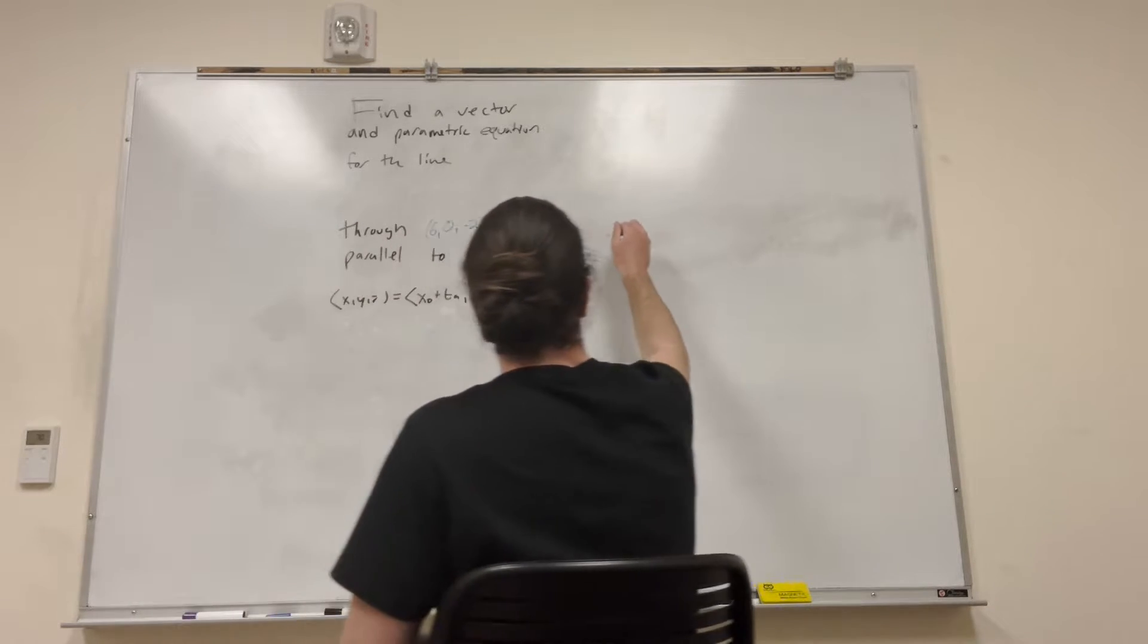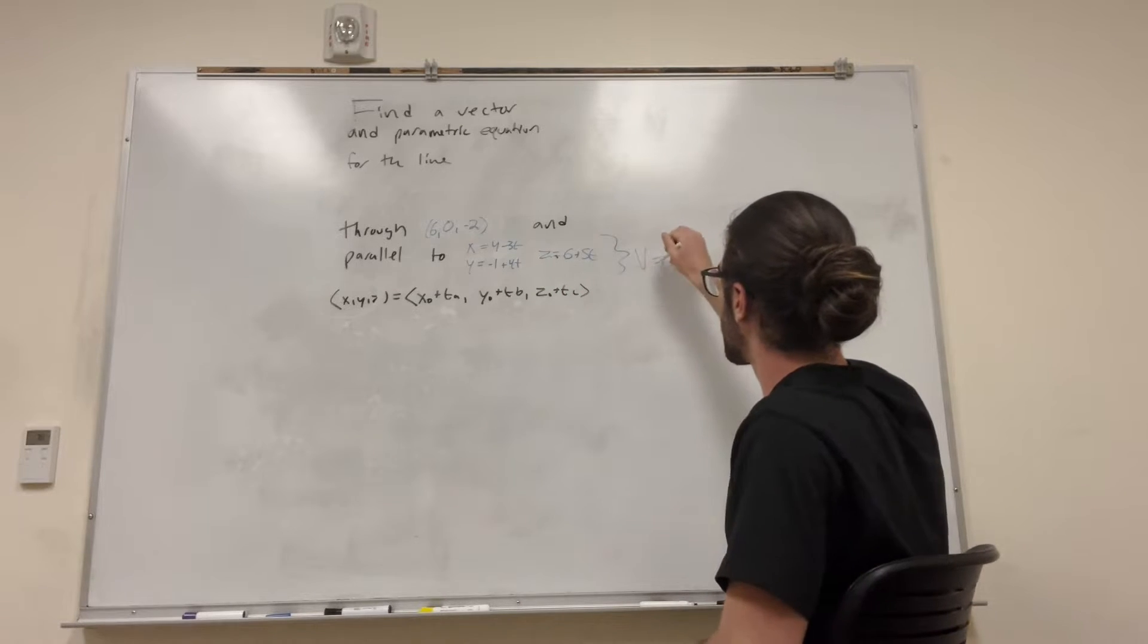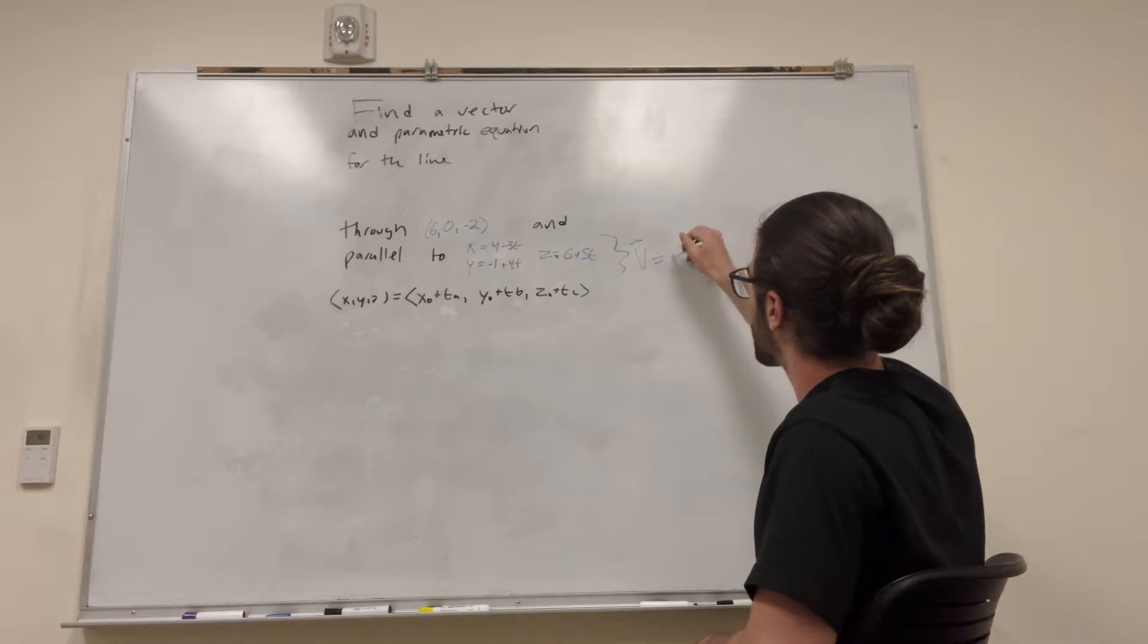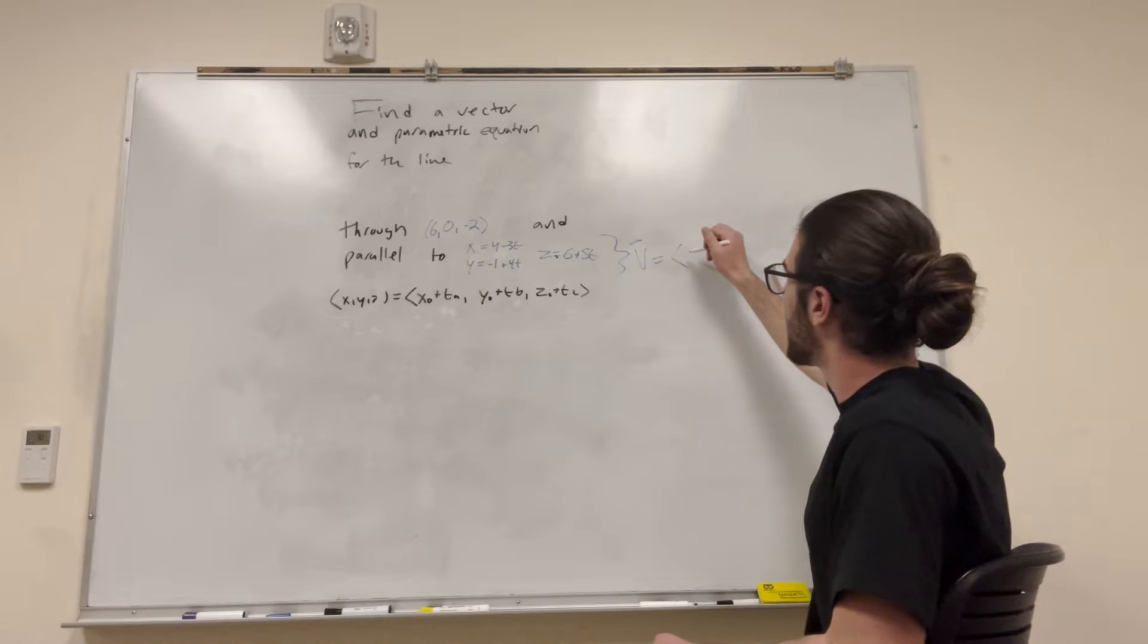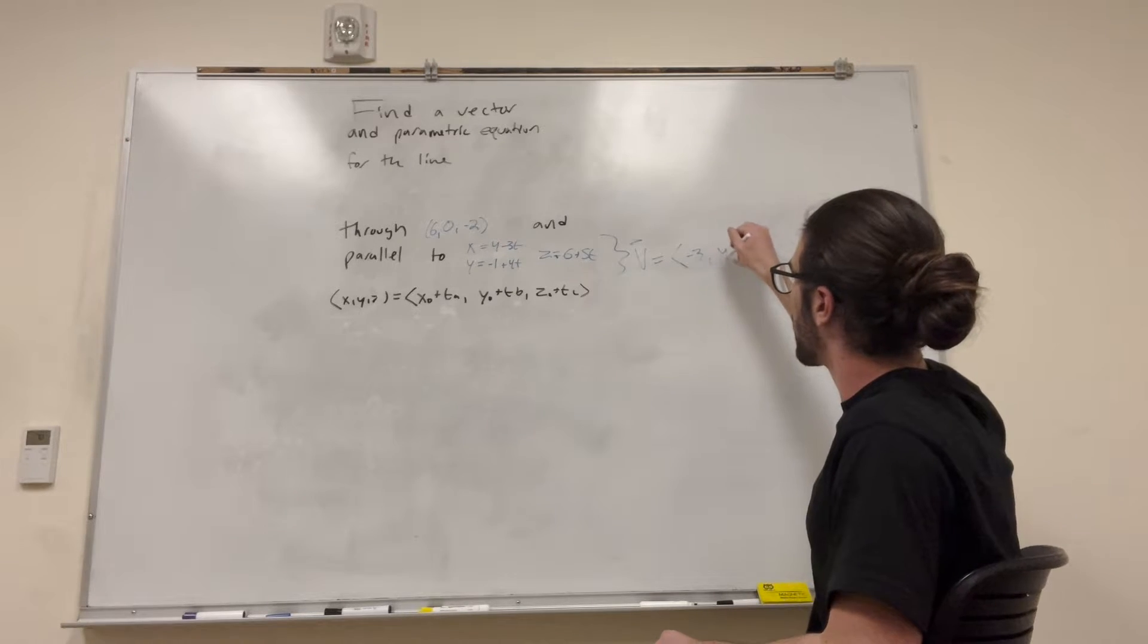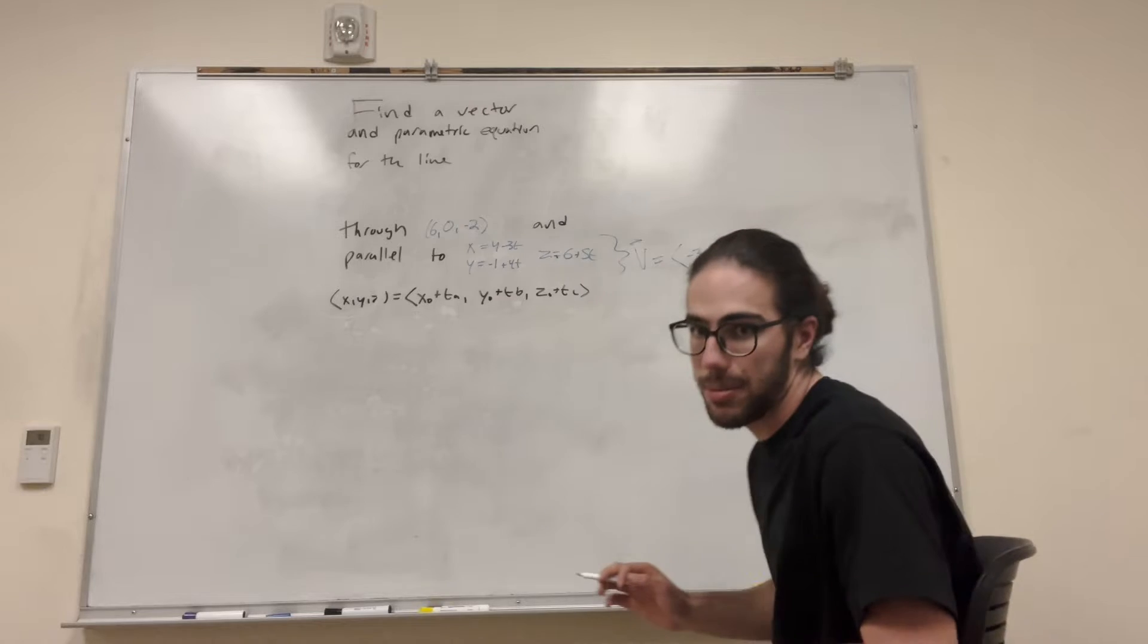Basically, this vector is going to look like this. So if you get rid of the point that it's starting at, it's just going to look like (-3, 4, 5). That is the vector that we're going to be copying.